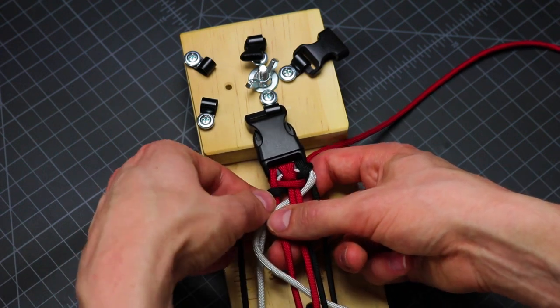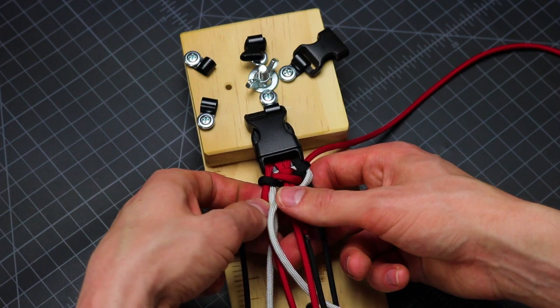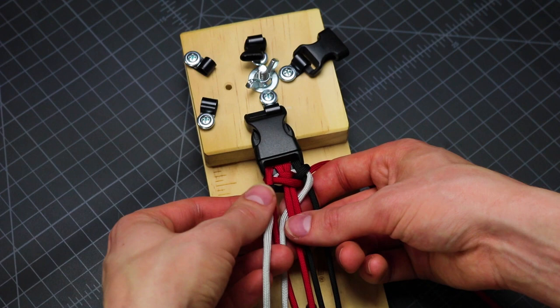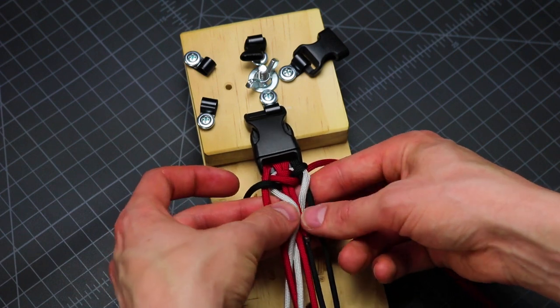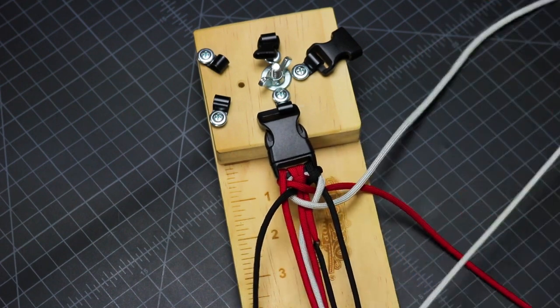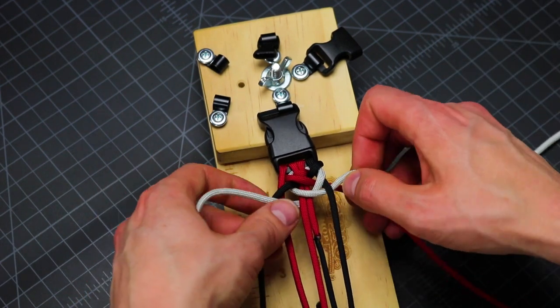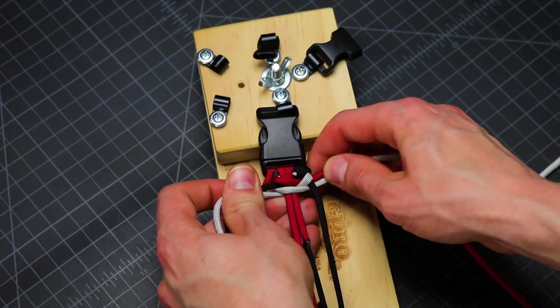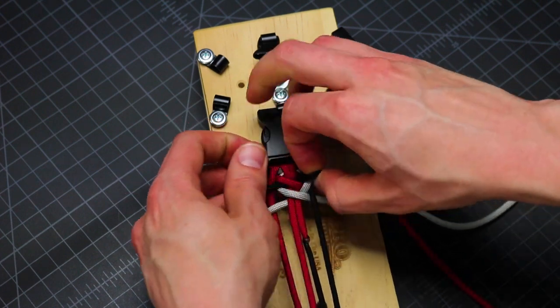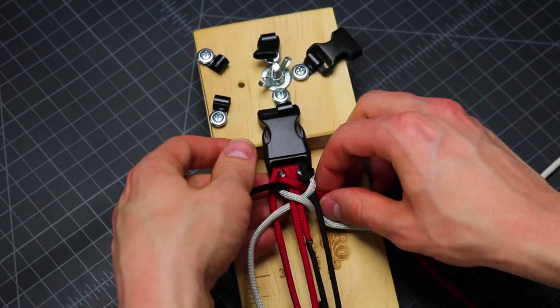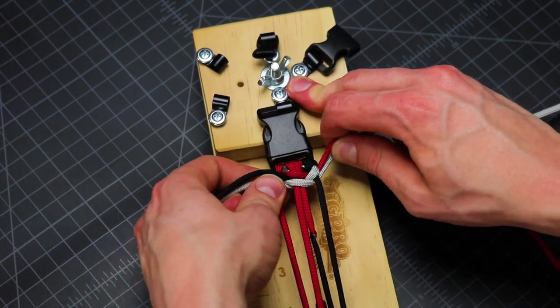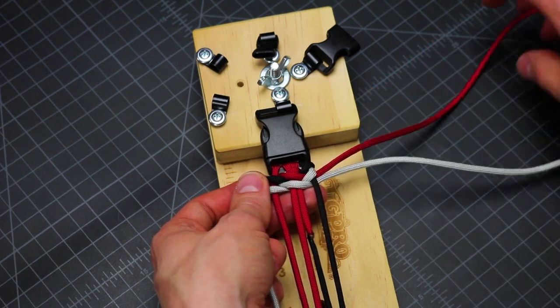And this one is going to go under. Oops, we'll pull that one through first. This one's going to go underneath, over, and then under. Then just pull all those cords tight. You may want to check to make sure your core strands are tight as well. Then squish that down, and we're going to do the same thing again with our colored cords.